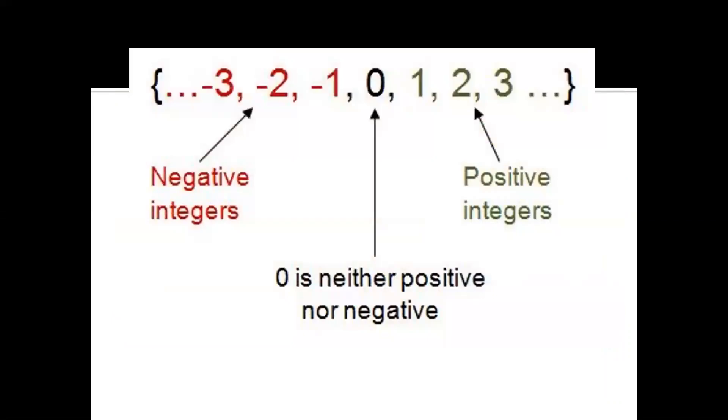Zero is neither positive nor negative. We have negative integers like minus one, minus two, minus three, minus four, minus five and so on. We also have positive integers one, two, three, four, five and so on.